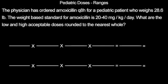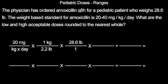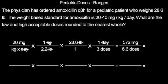Starting with our low value of 20 milligrams per kilogram per day, we convert from kilograms into pounds. We add the child's body weight, and we divide the day into three separate doses. We cancel like terms and multiply across. We get 572 milligrams over 6.6 doses. We divide and are left with 87 milligrams when rounded to the nearest whole.